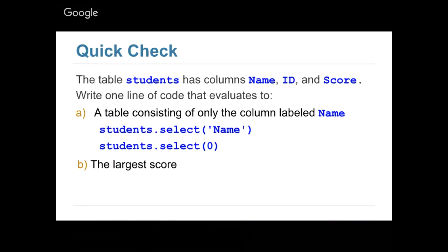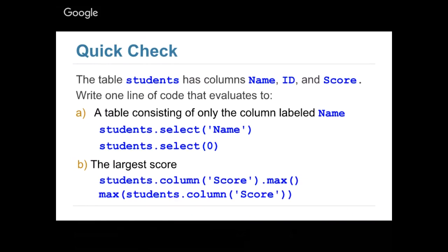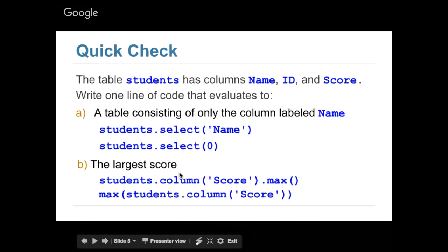One way to do this is to do students.column('score').max, so .max happens to be a method on an array that you can call. The other way is to call the function max on students.column('score'). So students.column('score') will grab the array containing all the scores, and I can use the max method or the max function to grab the maximum score.